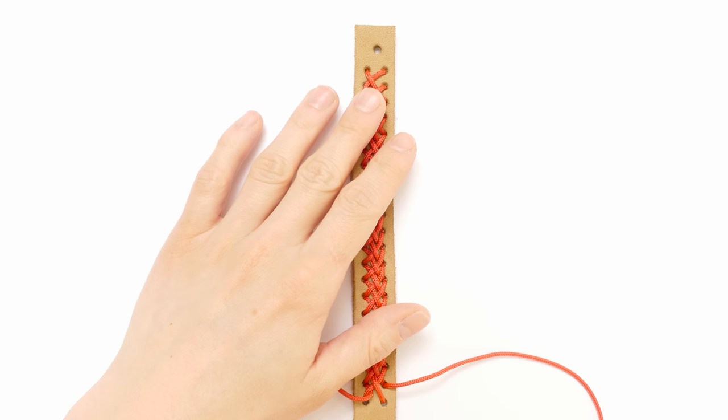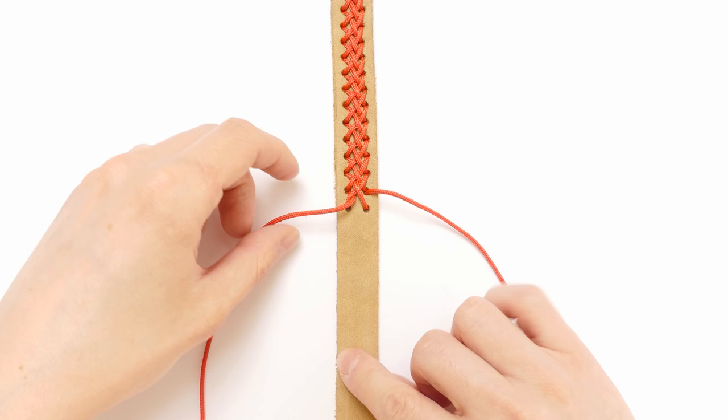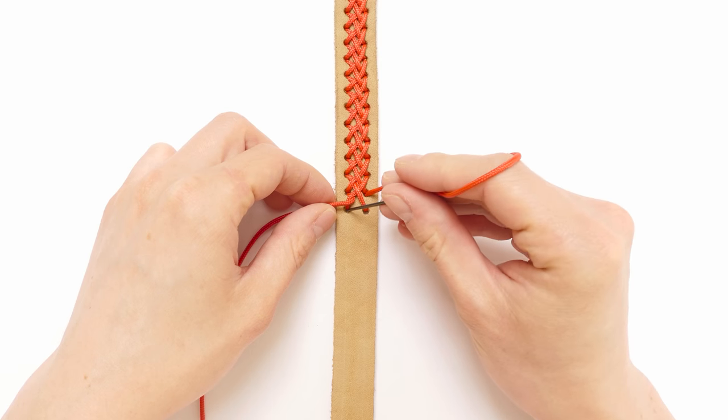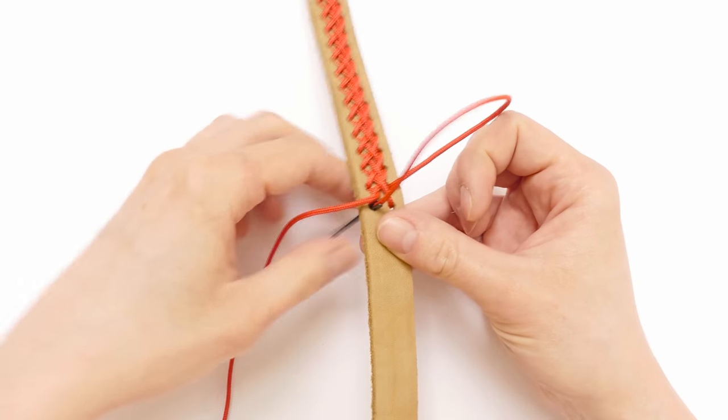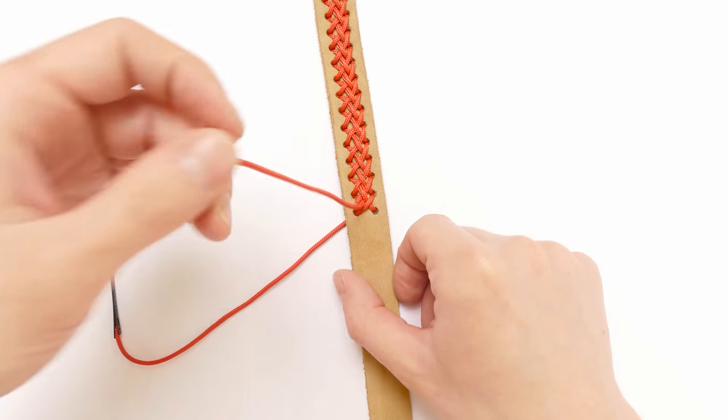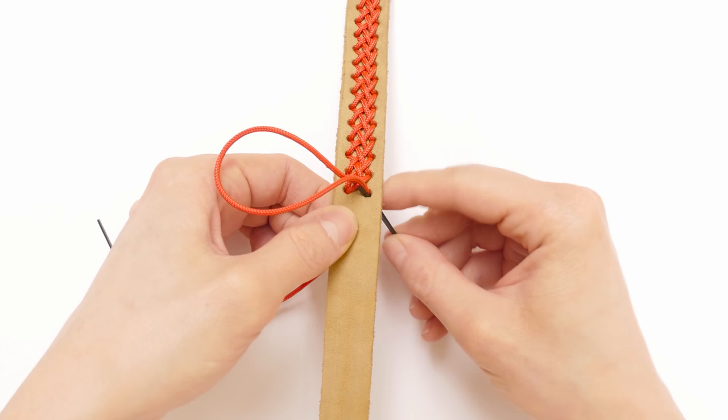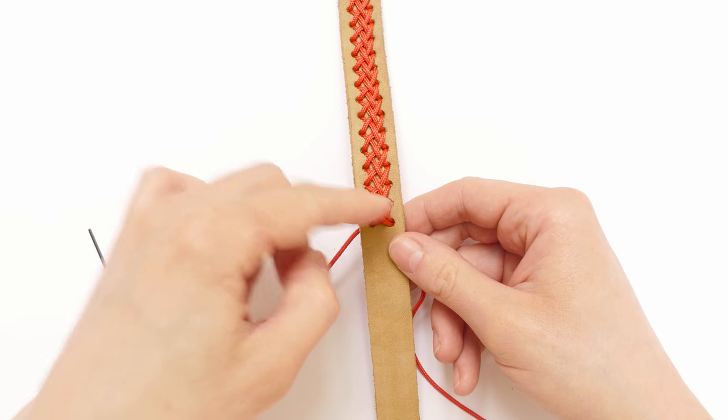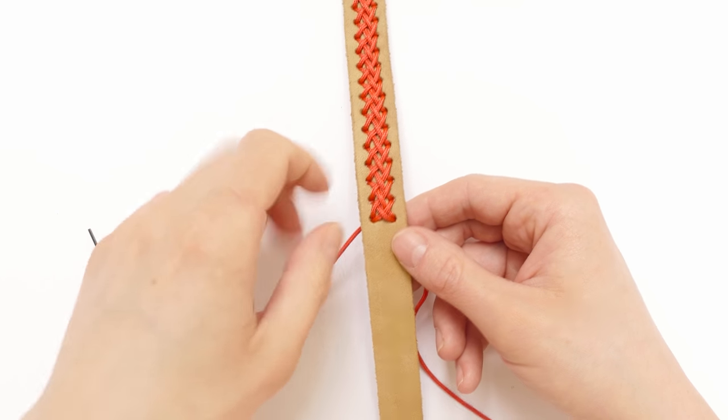Once you have done your center braid, it is time to finish it. Here at the bottom I have one cord to each of the sides. I'm going to pick up the right one and travel into the hole on the left. Then pick up my left cord and place it in the hole on the right. You can see that I more or less kept the over one, under one sequence. And we can now turn around the bracelet.